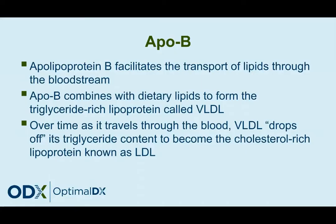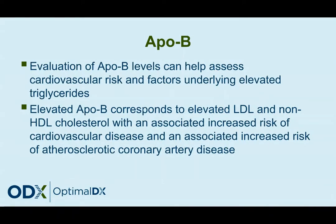Apolipoprotein B facilitates the transport of lipids through the bloodstream. It combines with dietary lipids to form the triglyceride-rich lipoprotein called VLDL. Over time, as VLDL travels through the blood, it drops off its triglyceride content to become the cholesterol-rich lipoprotein known as LDL. Evaluation of ApoB levels can help assess cardiovascular risk and factors underlying elevated triglycerides. Elevated ApoB levels are associated with an increased risk for cardiovascular disease and an increased risk of atherosclerotic coronary artery disease.